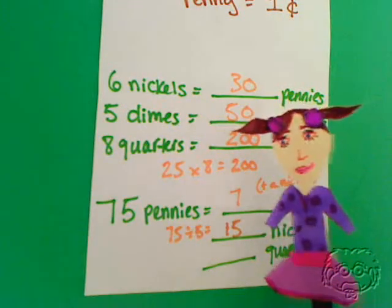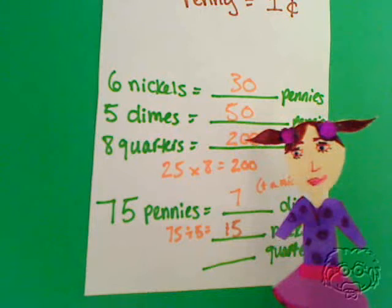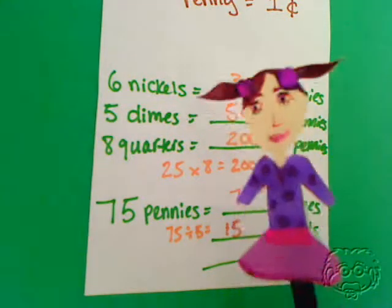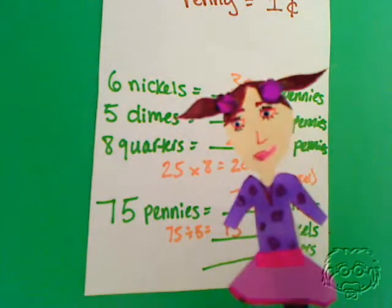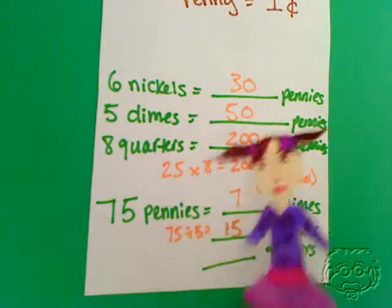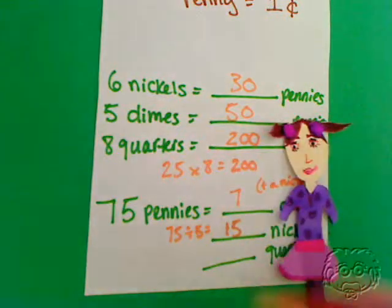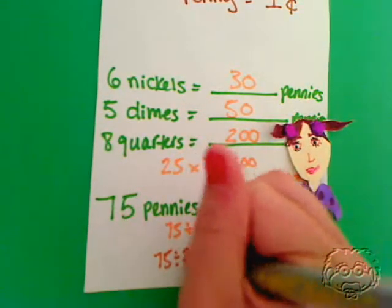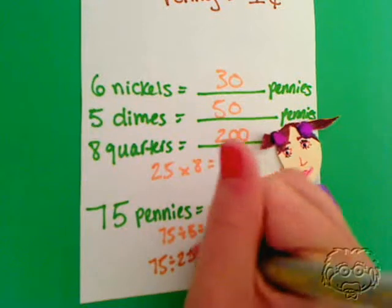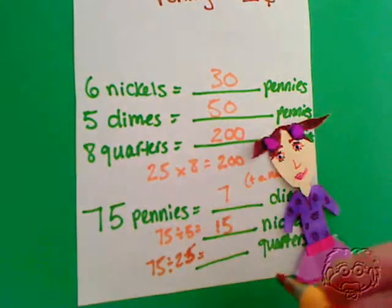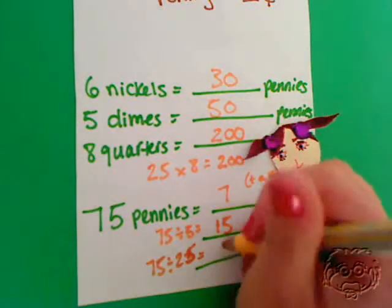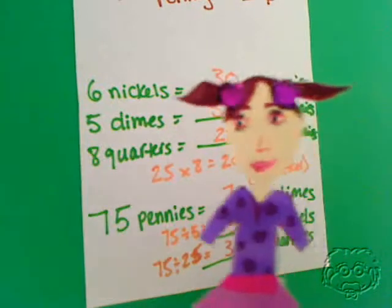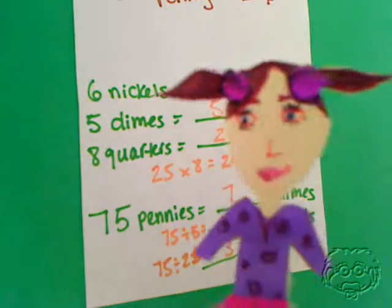Quarters — easy. A quarter is worth 25 cents, so we're going to divide 75 by 25. 75 divided by 25 equals 3. So 75 pennies is equal to 3 quarters.